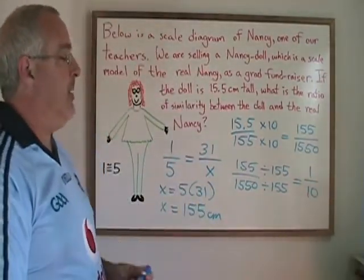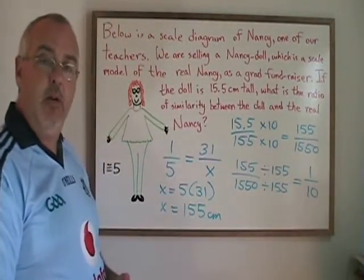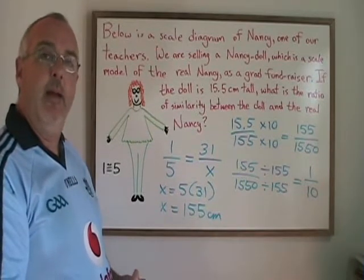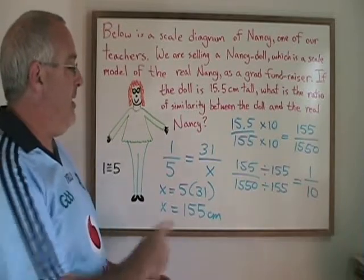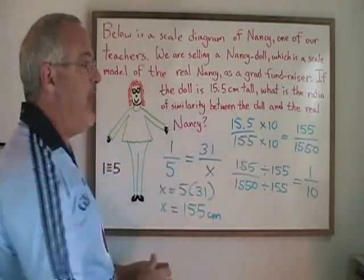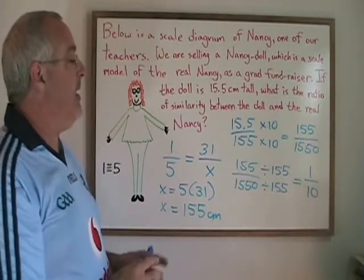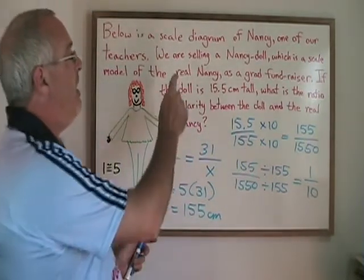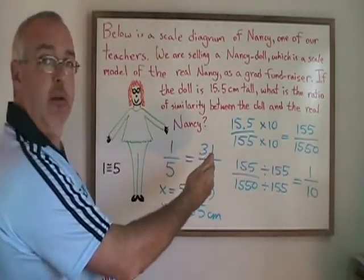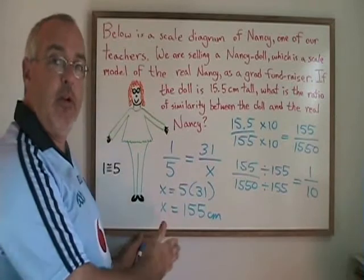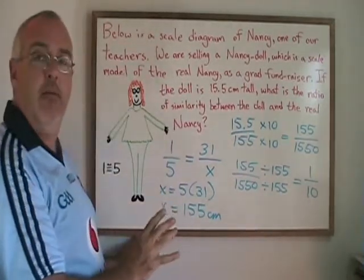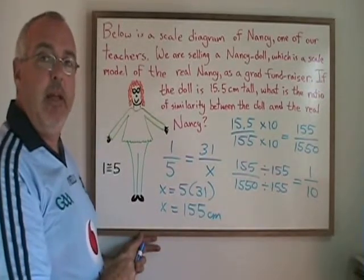This means there is a 1 to 10 ratio of similarity between the doll and the real Nancy. In this case I only had to do one proportion, and the other step was to build and simplify this ratio. The important thing is being able to look at the situation and use reading comprehension and an understanding of both ratio and proportion — and the difference between the two — to make this complicated-looking problem a very easy problem mathematically in the end.